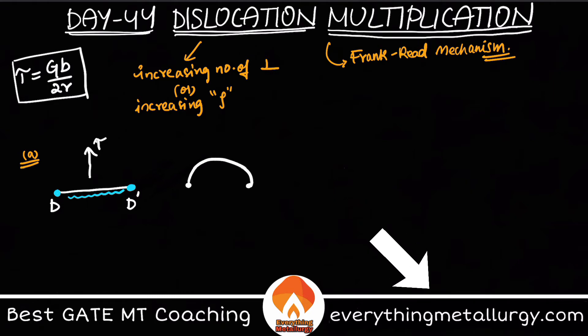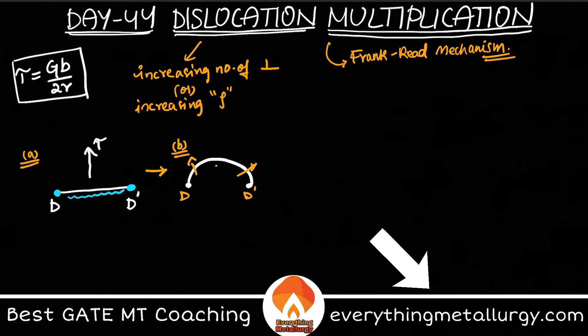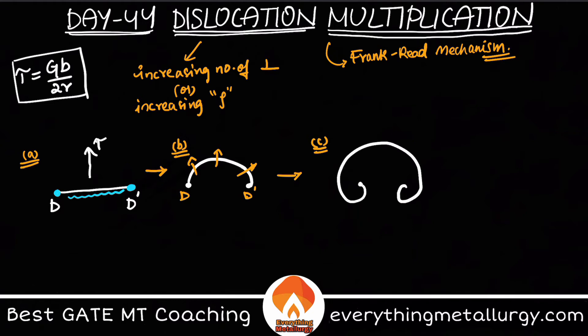The line between D and D' will try to bend. So D and D' remain in the same position, but because of the applied shear stress tau, the dislocation bulges out of the slip plane, forming something like a semicircle.